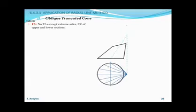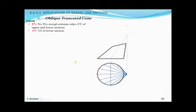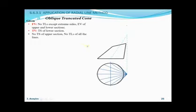For the oblique truncated cone: in the front view, there are no true lengths except at the extreme edges. Edge views of both the lower and upper sections are given. In the top view, the true shape of the lower section is given, but no true shape of the upper section is given and no true lengths of the lines are given — so steps must be taken to find them.